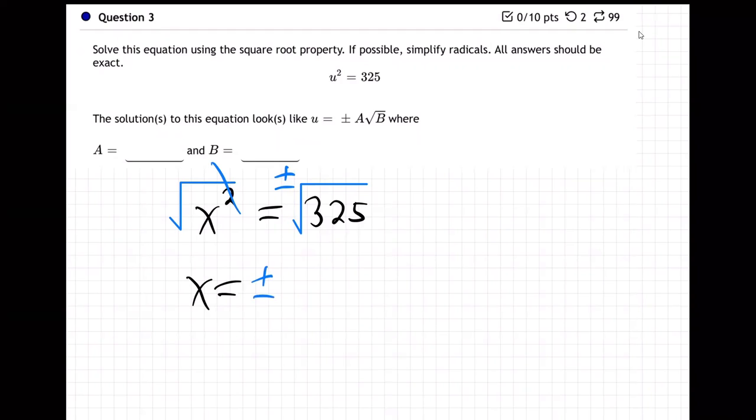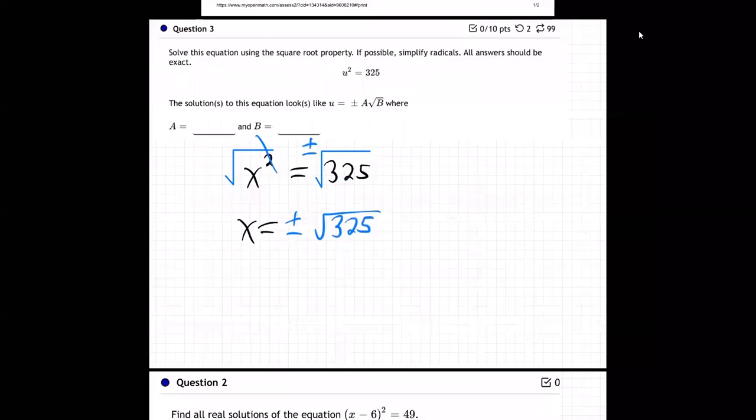Now, we have to simplify that 325, don't we? So how do we simplify the square root of 325? We got to break it down. Like take your calculator. Now, as I look at 325, I don't know everything in the world that goes in there. But you know what I know for sure?